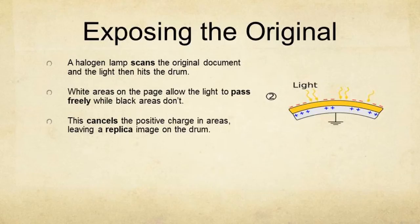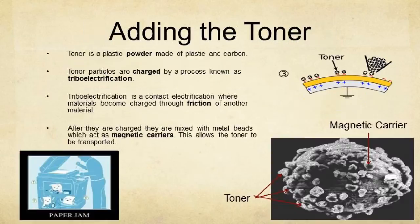Exposing the original: a halogen light is used to scan the original document. White areas on the page allow the light to freely pass while black areas don't. The light then hits the drum and cancels the positive charge in those areas to produce a replica image. You can see the light bouncing on top of the drum in diagram two.